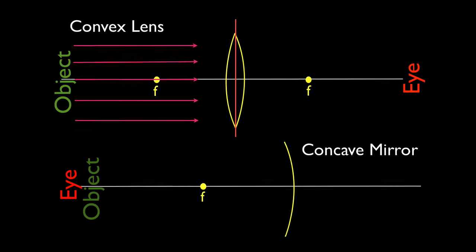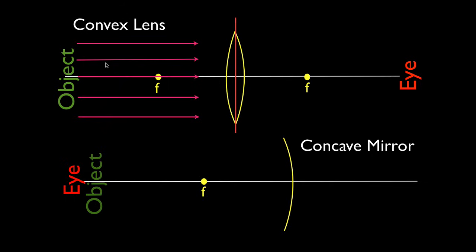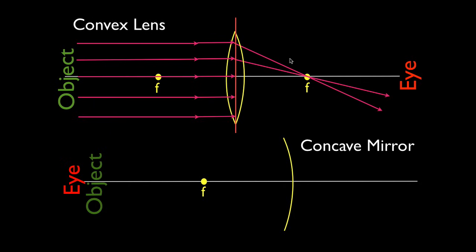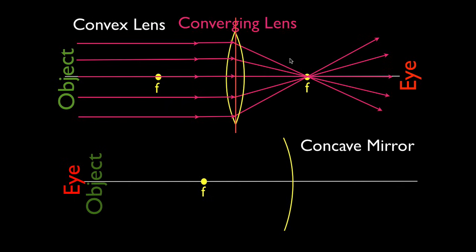We're going to use parallel light rays — we're looking at an object that is far away and the light rays are coming in parallel. They pass through the lens and they're going to be refracted. We can approximate that refraction by showing the bending of light at the center line. The light rays, when they come through the lens, are bent in such a way that they all pass through a single point known as the focal point. They converge, and therefore we call this lens a converging lens. As long as the object is beyond the focal point, the image will appear inverted.